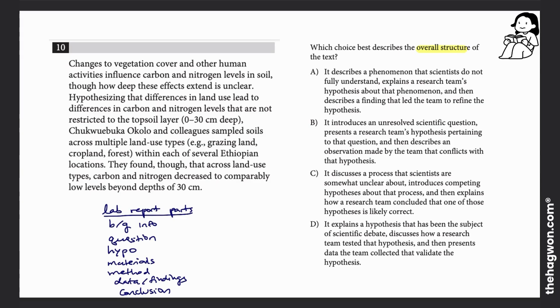The first sentence says changes to vegetation cover and other human activities influence carbon and nitrogen levels in soil, though—which, 'though' always means 'but'—so I know this is what's important: but how deep these effects extend is unclear. Oh great, I have my question.